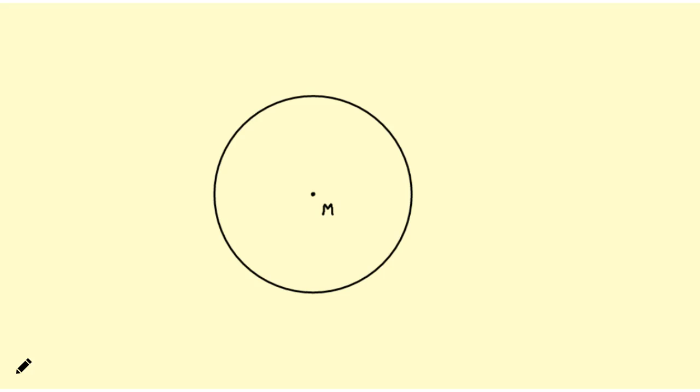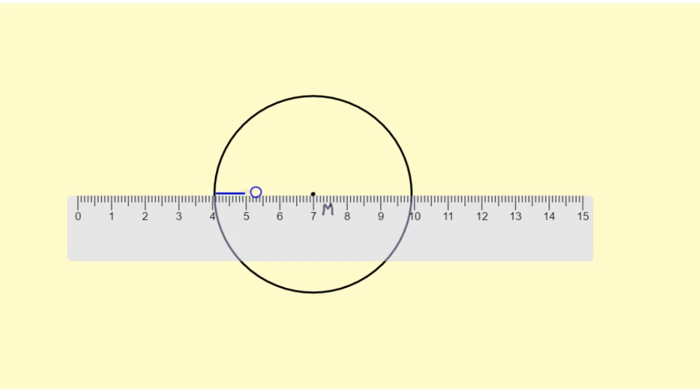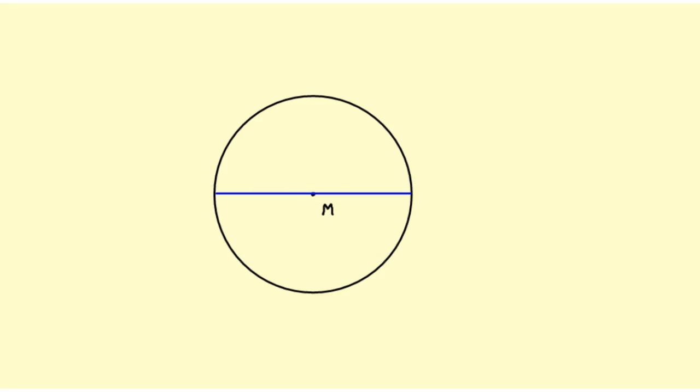In this video I'm going to show you how to circumscribe a square around a circle. I start with a circle with center M. The first thing that I'm going to do is draw a diameter using a straight edge.